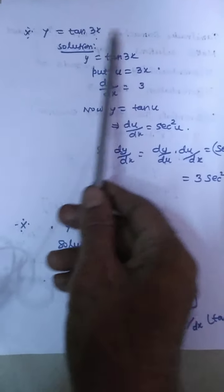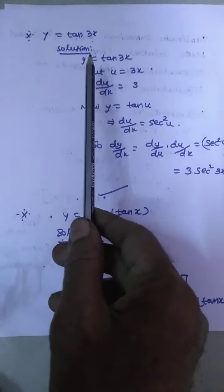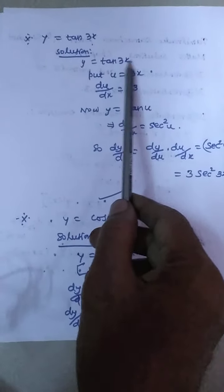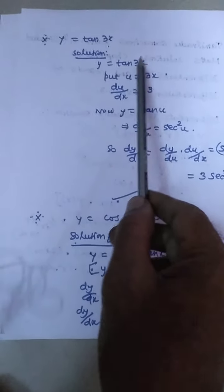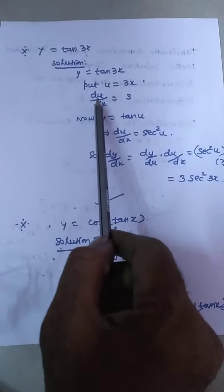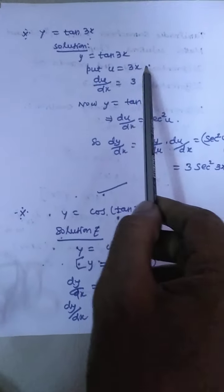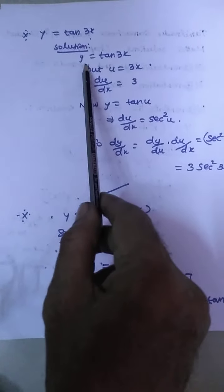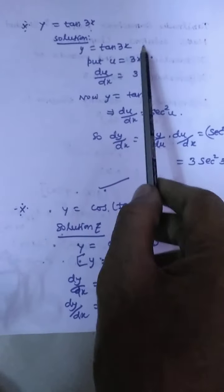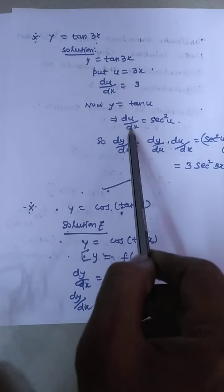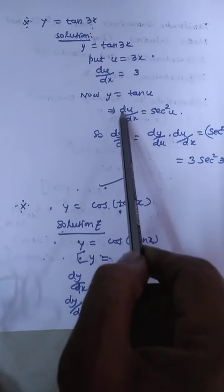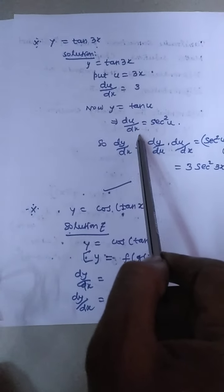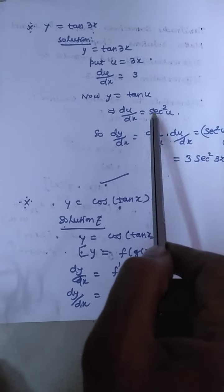Next, Question 2: y is equal to tan(3x). Solution: y = tan(3x). Put u = 3x, so y = tan(u). Then du/dx = 3 and dy/du = sec²(u).